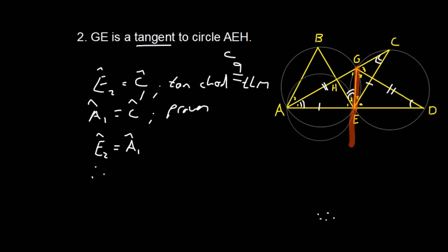We don't need to give a reason for that. And because those two are equal, we can say, therefore, GE is a tangent. And your reason would be angle between line and chord. Not tangent and chord, line and chord, because we just proved that the line itself was a tangent. Okay. Let us move on.